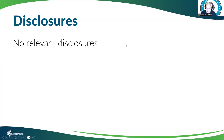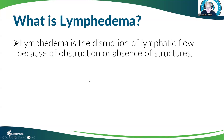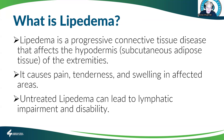I have no relevant disclosures for this. So what's lymphedema? Lymphedema is disruption of lymphatic flow because of obstruction or absence of structures. And what's lipedema? It's a progressive connective tissue disease that affects the hypodermis or subcutaneous adipose tissue of the extremities. It causes pain, tenderness, and swelling in affected areas, and untreated lipedema can lead to lymphatic impairment and disability.